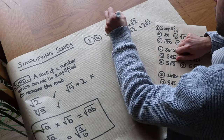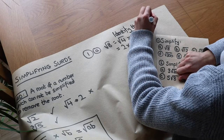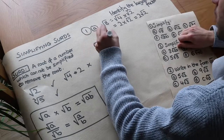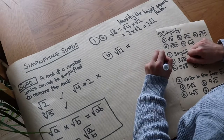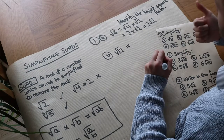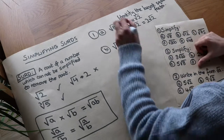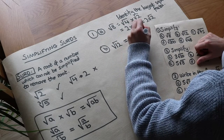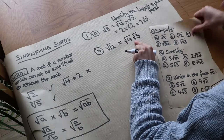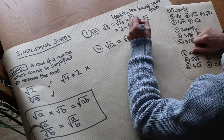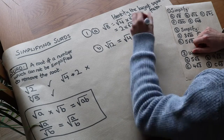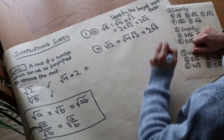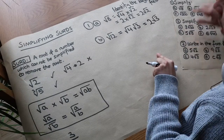Let's do some more examples. We've got the square root of 12. What is the biggest square factor of 12? Is 4 a factor and a square number? Yes, it is. So we could write root 12 as root 4 times root 3 — notice I'm not putting the times symbol in between, because when you have them next to each other it just means you multiply them. The square root of 4 is 2, so it simplifies to 2 root 3, and that doesn't simplify any further.